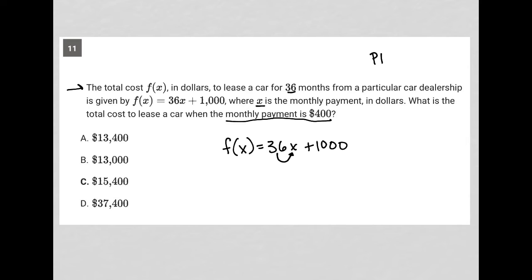So we're using a strategy called plug in information from the question. We're told basically that x is equal to 400, so all I'm going to do is replace that x with 400 to solve.